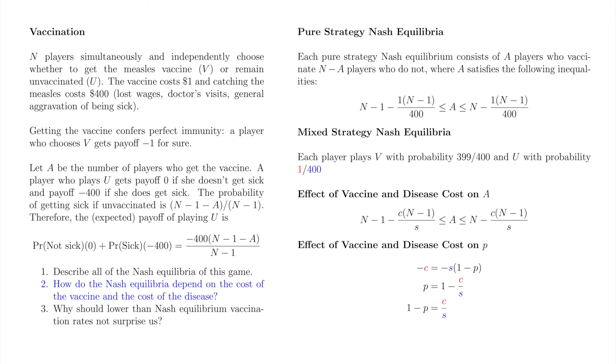Our result about the relationship between the vaccination rate and the fraction C over S is even clearer when we consider the mixed strategy Nash equilibrium. The vaccination rate is 1 minus C over S. As C increases or S decreases, the vaccination rate falls. As C decreases or S increases, the vaccination rate increases.